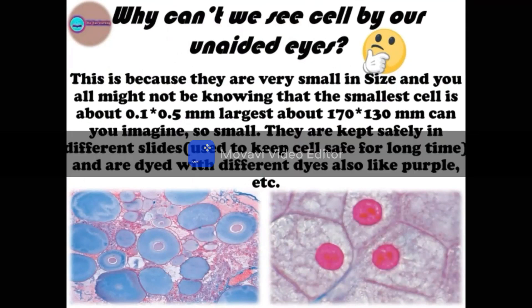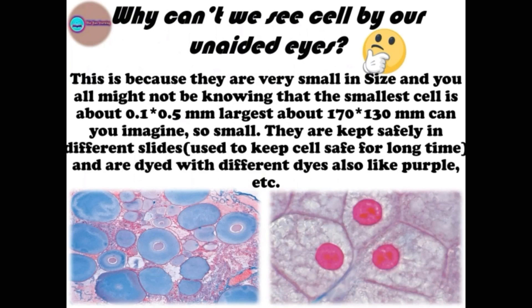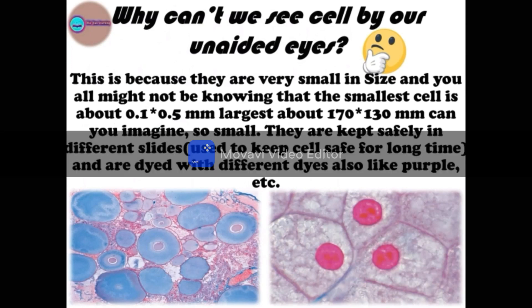Why can't we see cells with our naked eyes? Because they are very small in size. The smallest cell is 0.1 × 0.5 µm and the largest cell is 170 × 130 mm. Organisms show a variety of cells in number, shape, and size.